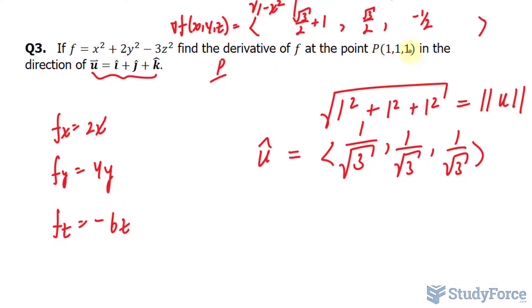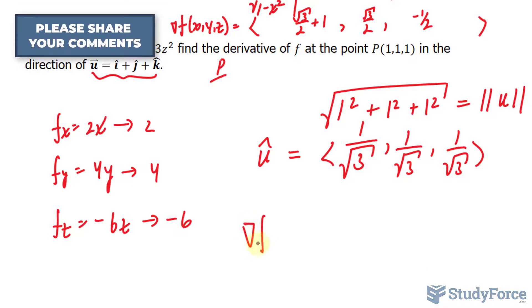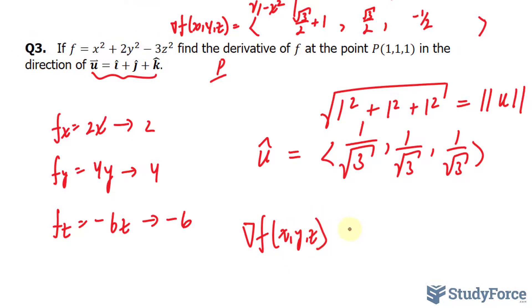Evaluating this at (1,1,1), this becomes a 2, this becomes a 4, and this is negative 6. So our gradient of our function, represented like this, x, y, z, is a vector at 2, 4, and negative 6.